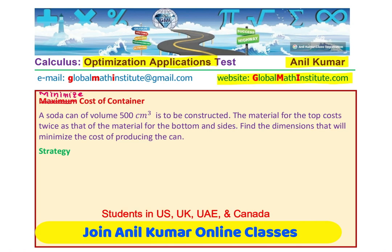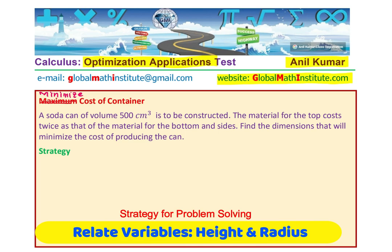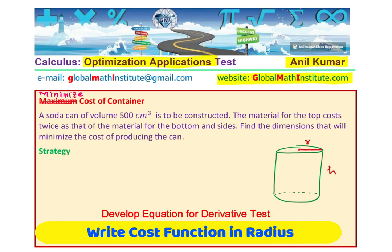You can pause the video, answer the question, and then look into my suggestions. For optimization questions, we should first sketch a diagram and relate the variables. In this case, we have a cylindrical can. Let us say that the radius of the top and bottom is r and the height is h of this particular can.